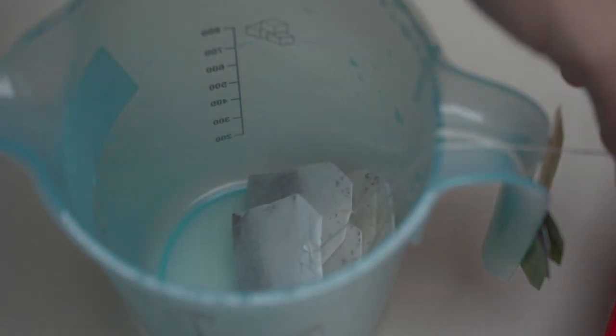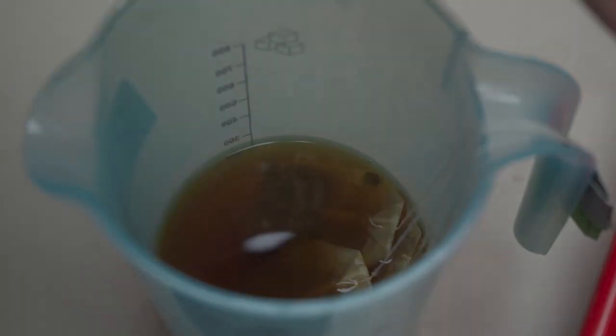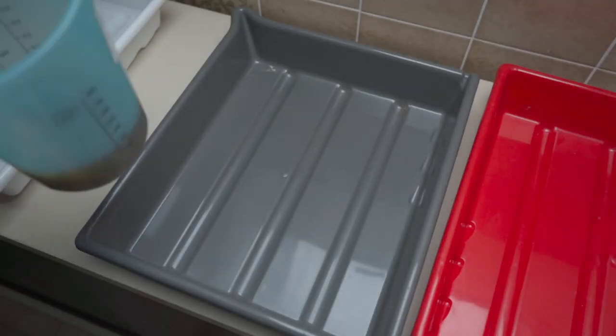This one is pretty simple. Just make one liter of very very strong green tea. As you can see I'm using five tea bags per liter here so definitely don't want to drink that.